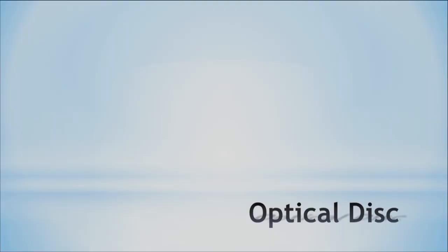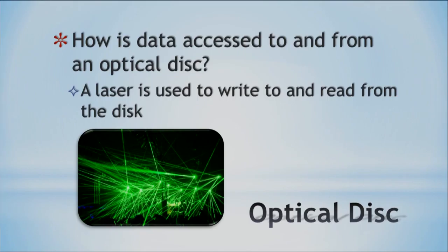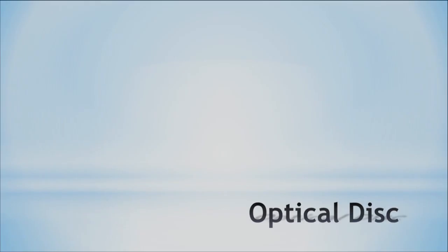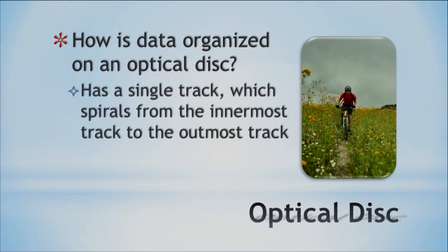Let's get a few more details on the general optical disk and how they work. How is data accessed to and from an optical disk? A laser writes to the disk and also reads from the disk. About the general organization: on the disk is a single track that spirals from the innermost track to the outermost track — just one long spiral. That's how the data is stored, in contrast to other disks where the circles are nested with each other.